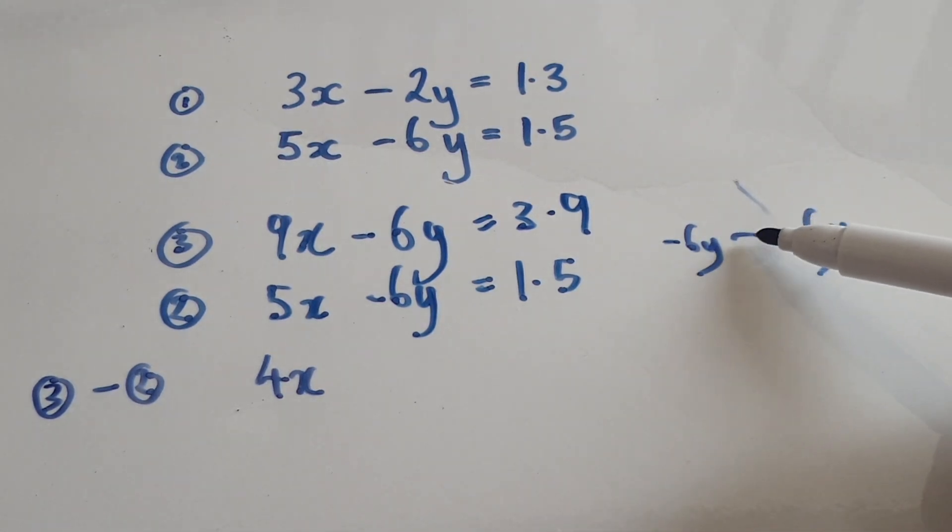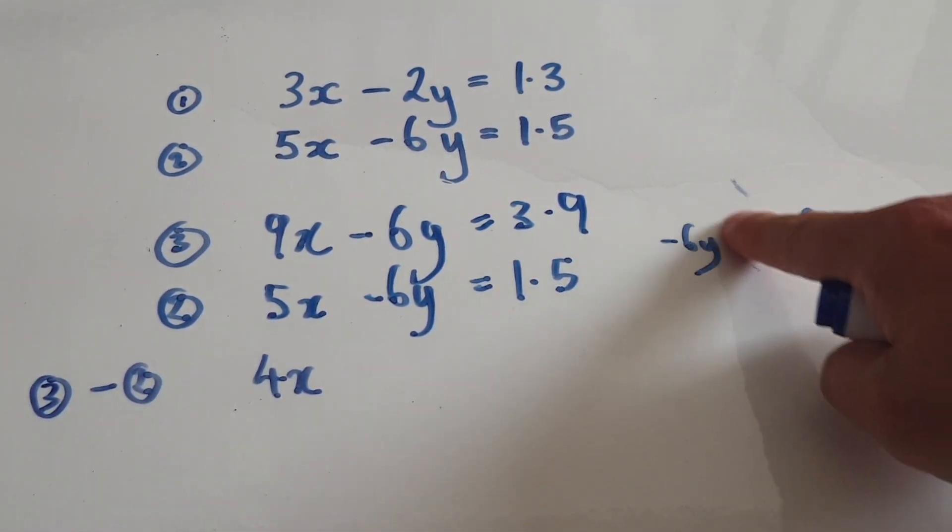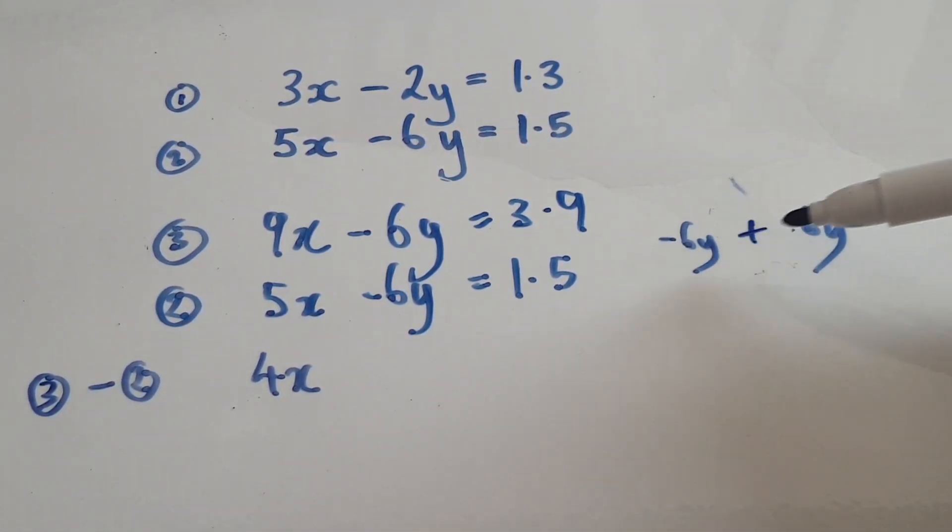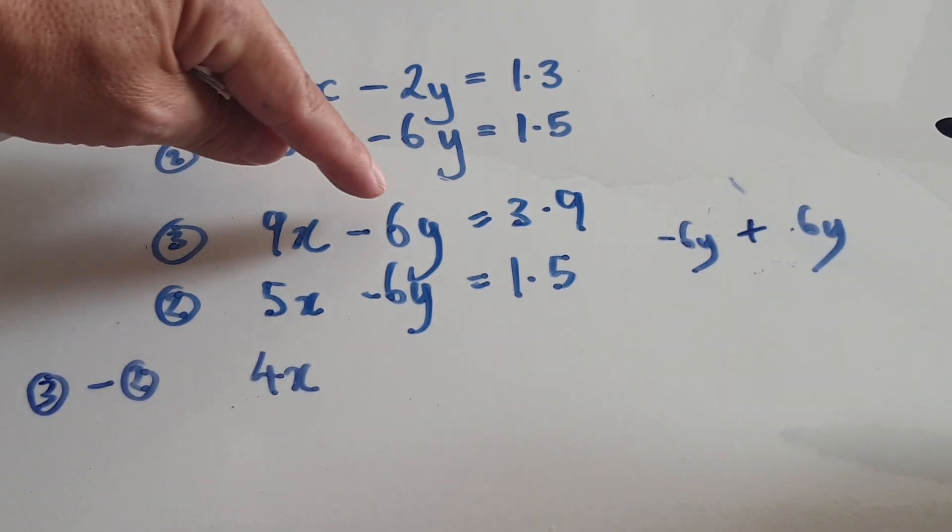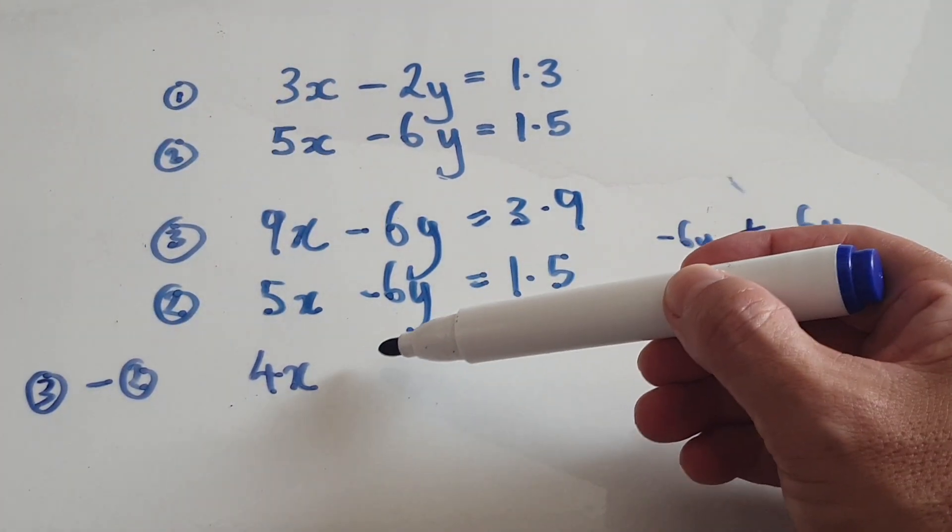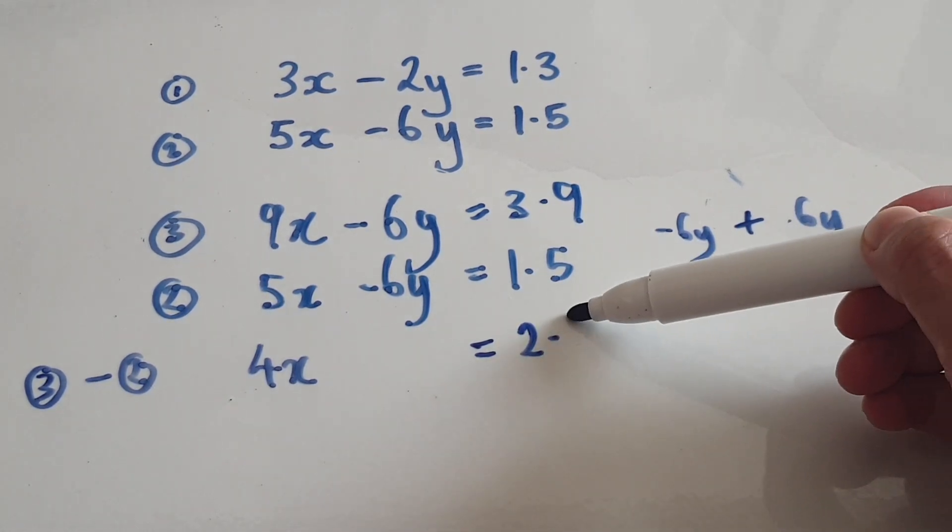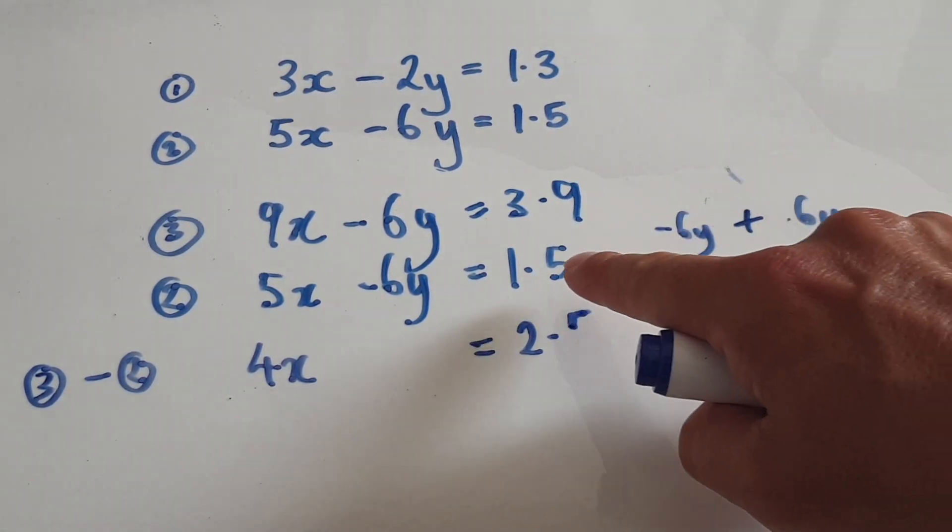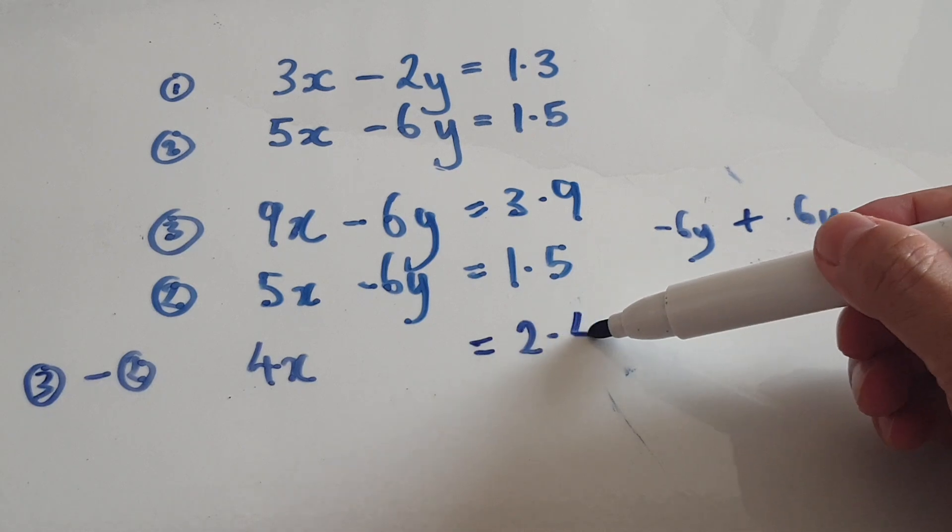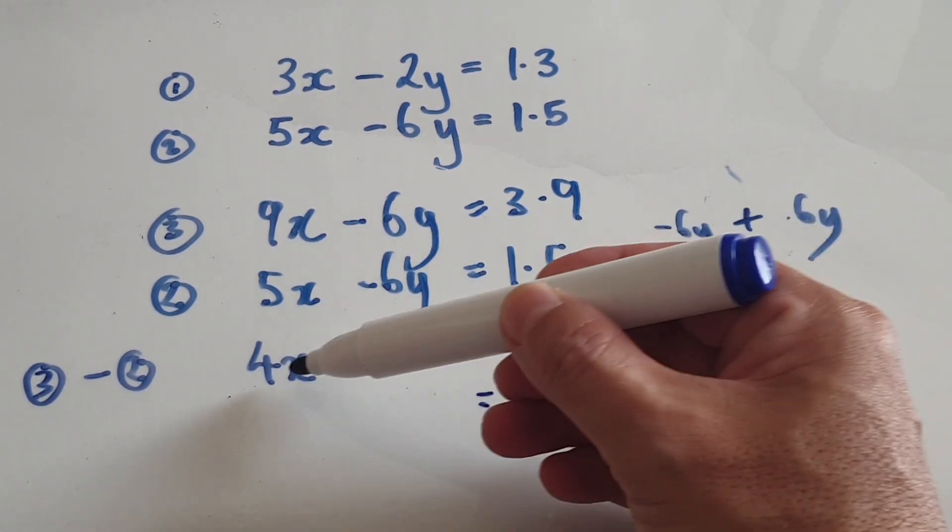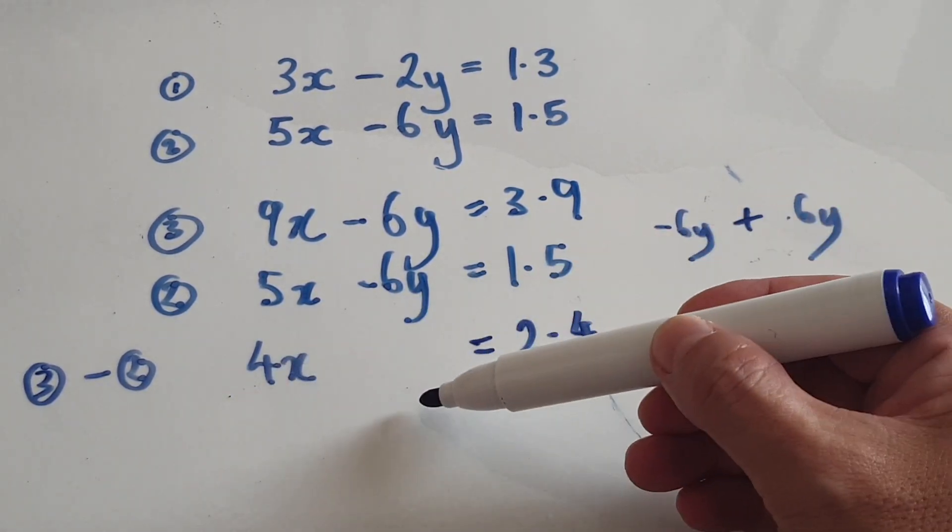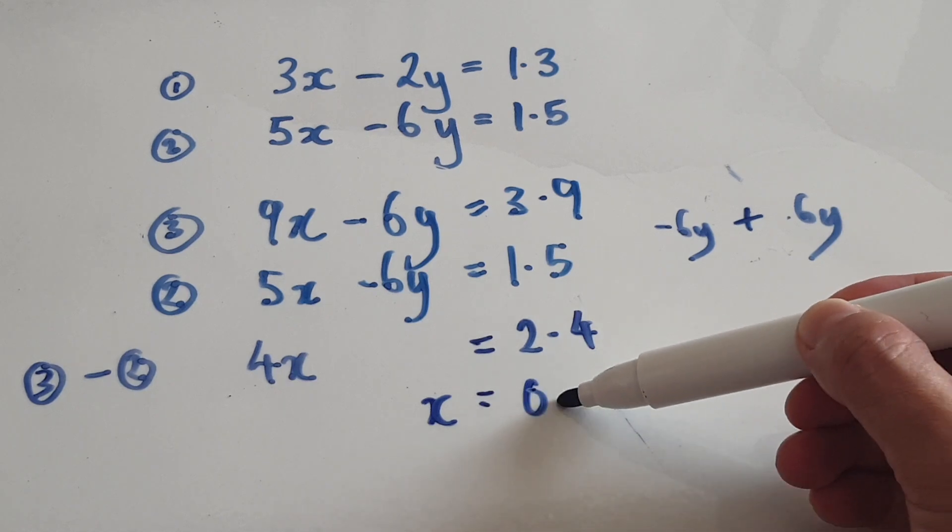So you can see that you've eliminated the y. So this take away this would be 0. And then this take away this would be 2.4. So now divide everything by 4. So x equals 0.6.